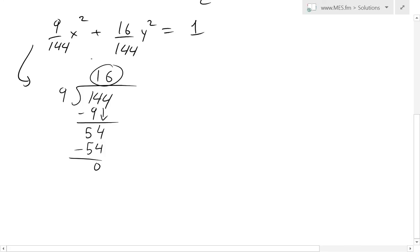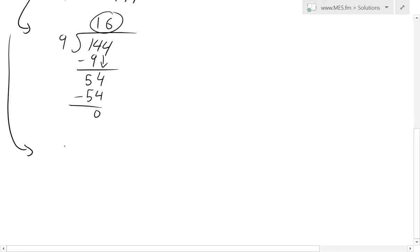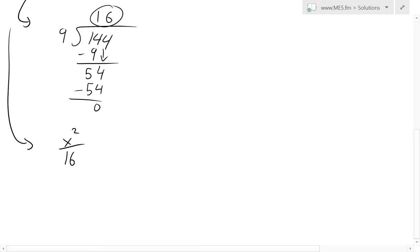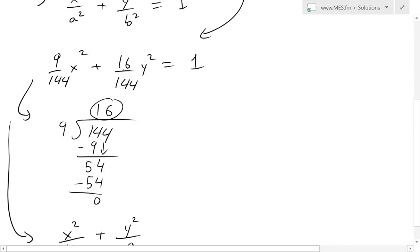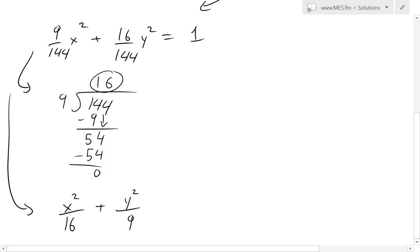So then this equation becomes, this is going to be x squared over 16, because 9 goes into 144 16 times, plus now we have y squared divided by 9, because this is 16, that just goes into it 9 times, equals to 1.